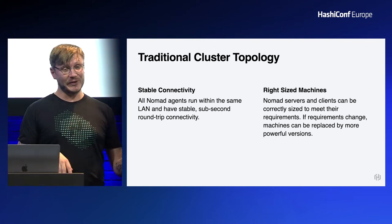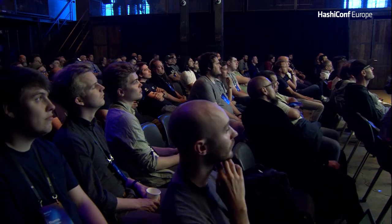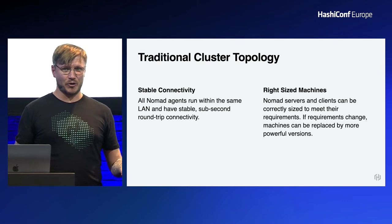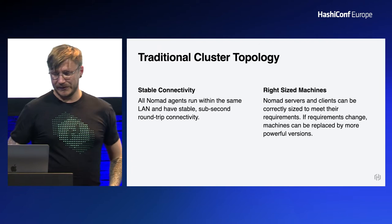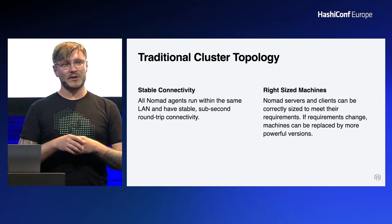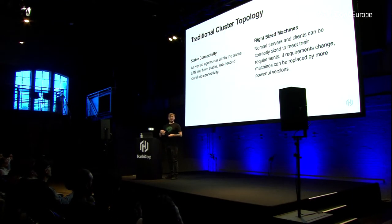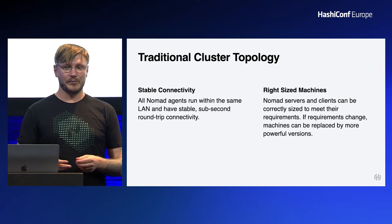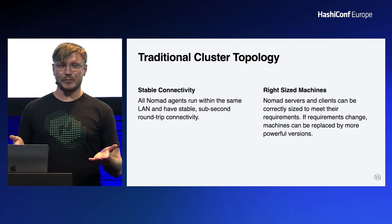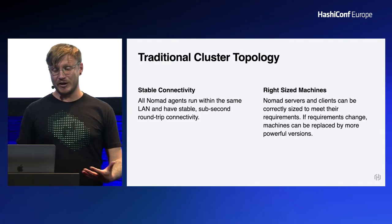The first characteristic is very stable internet connectivity. All agents, whether running in server or client mode, are probably always talking over LAN with sub-50-millisecond round trips — stable, no dropped packets. The second is right-sized machines: if you need a certain amount of CPU and memory, you size the machine adequately. Changing those instances isn't a big deal in something like Amazon EC2 — you click a button or use Terraform.